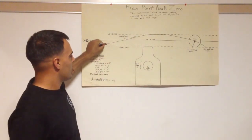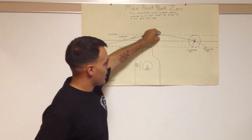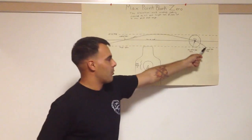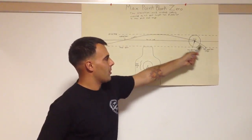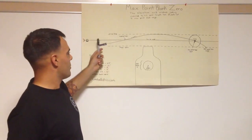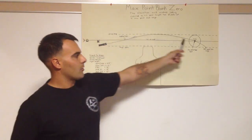As my bullets go further, the group starts to spread out, that creates a cone of fire. At the maximum ordinate and at max point blank range, a little bit of that cone of fire is going to be out of our danger space, but with that zero, the vital area, the vital zone will always be hit by some part of my cone of fire.